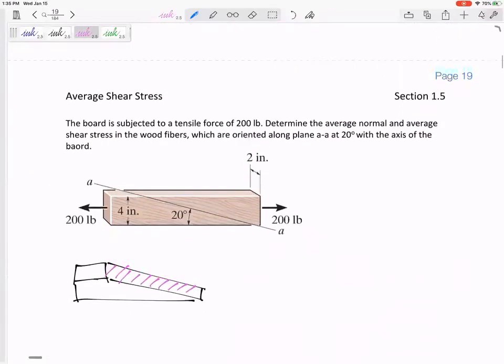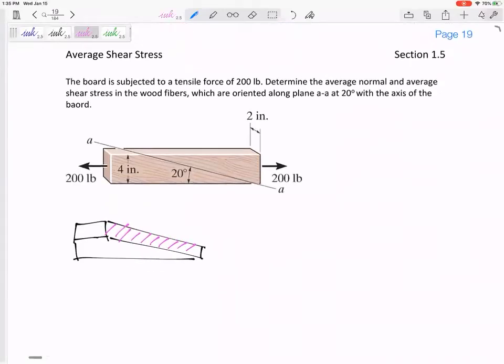Let's go back to this one right here. Board is subjected to a tensile force of 200 pounds to determine the average normal stress and the average shear stress in the wood fibers. So we're trying to find the stress at 20 degrees. So you see how that's why I went ahead and cut it. I went ahead and cut it at that 20 degrees. So this is the area. I need to find that N right there. I need to find this V right there.